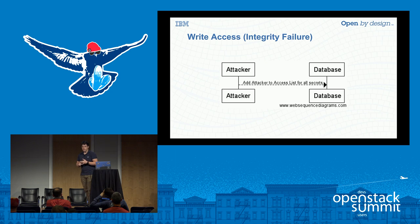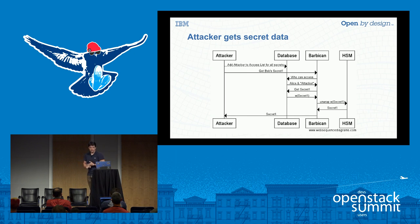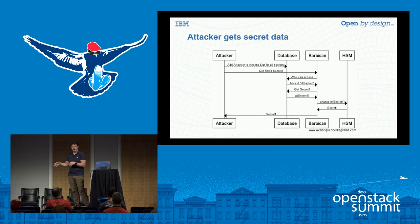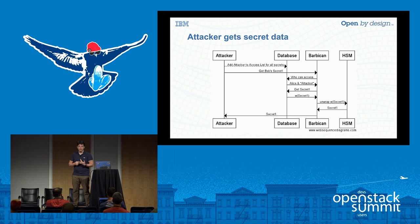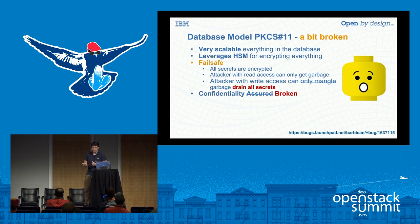One of the things we found during threat analysis was that when we looked at the integrity failure for the database, there's this ACL table in the database that's not protected. So what if an attacker adds themselves to the access list for Bob's secret? That's not protected by the HSM. If there's an integrity failure on the database - and remember, the model is supposed to support the database being compromised and never expose secrets - an attacker who can get into the database for a second or two and add themselves to the ACL tables can then say to Barbican: hey, I want Bob's secret. Barbican checks the ACL table, sees the attacker is in there for Bob's secret, then goes off to the very secure HSM, decrypts the key, and passes it back to the attacker. So the database model for PKCS11 had this original assertion of confidentiality assured, and through threat analysis we actually found that the model doesn't work as it is today - there's a really big design problem.